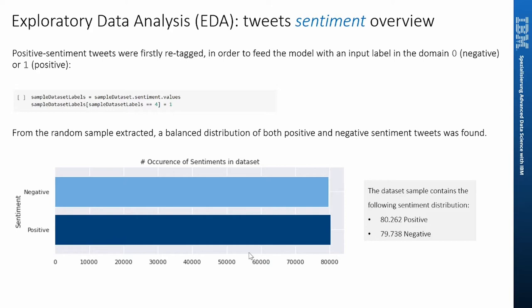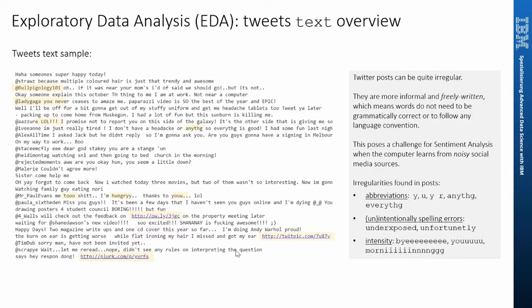As we have seen in the previous slide, the original dataset tagged positive sentiment tweets with the number 4. So in order to feed the model with an input label in the domain 0 and 1, positive sentiment tweets were re-tagged with the number 1. Continuing with the EDA, for illustration, I explain next a couple of tweets to show how noisy Twitter posts can be. They are more irregular and freely written than more formal sources like editorials or reviews. Such irregularities call for a more rigorous data cleansing — in other words, text treatment before loading the input into the model, which we'll cover in the next slide.